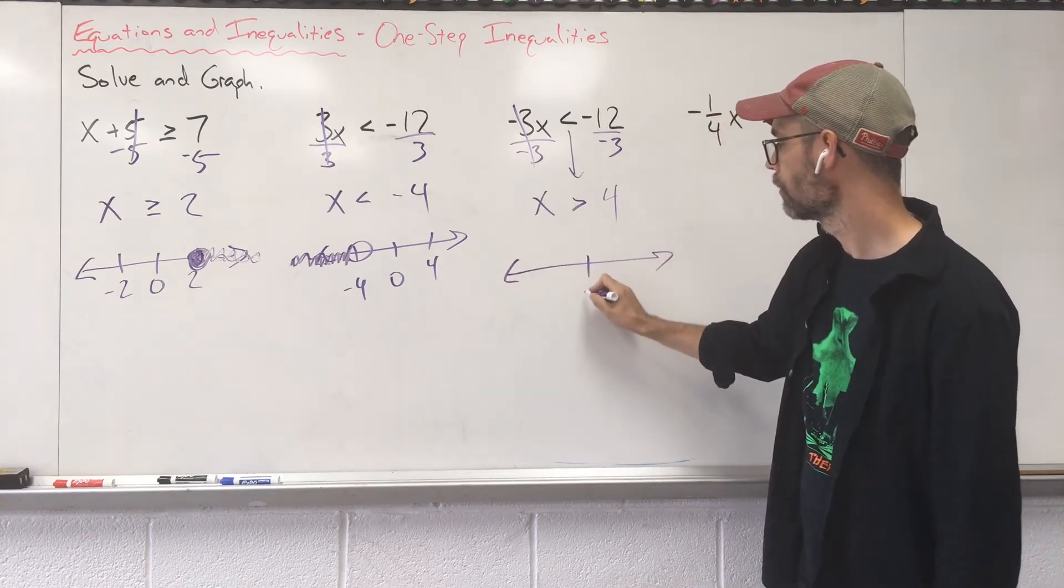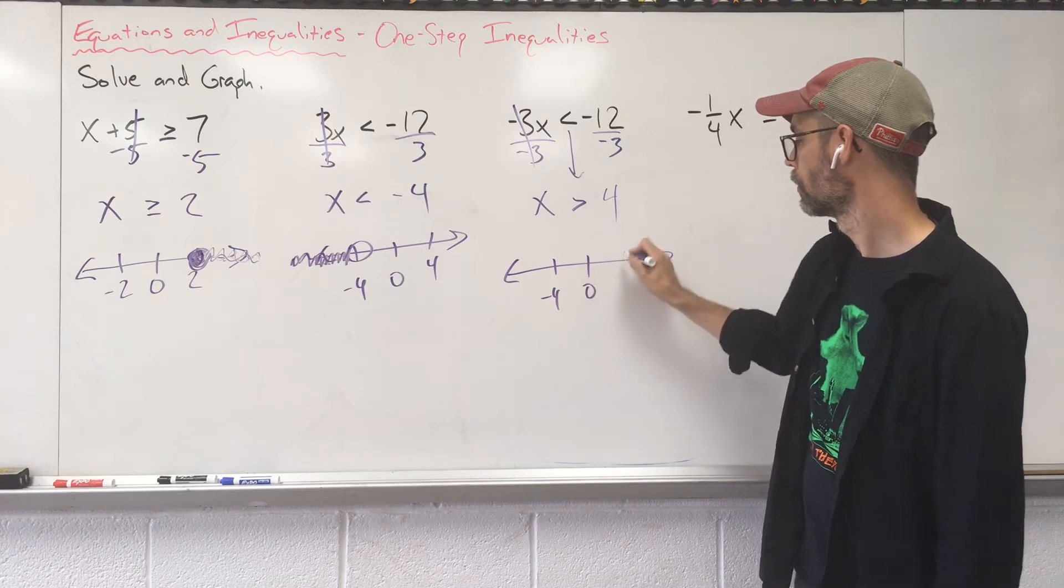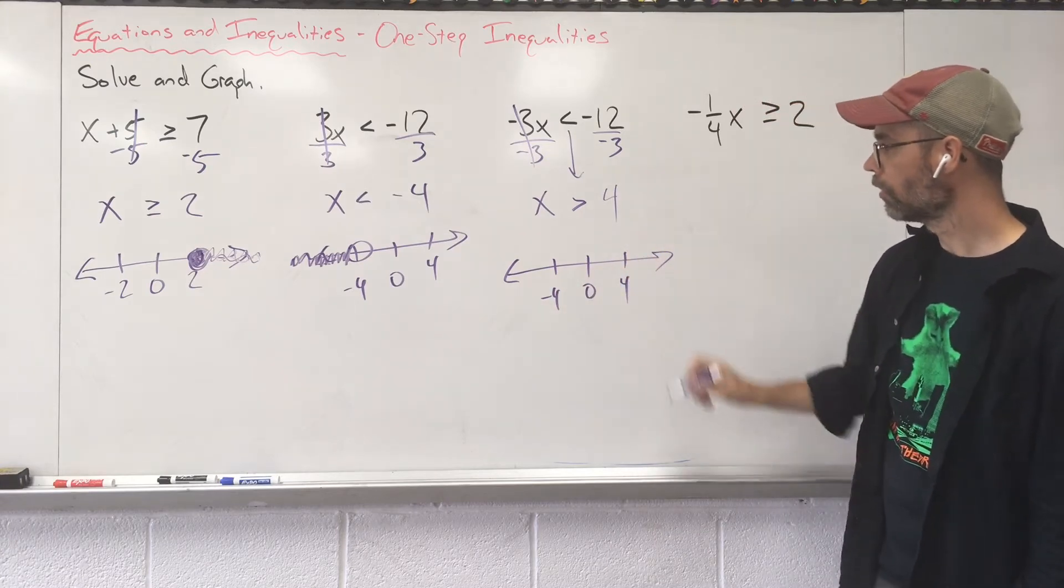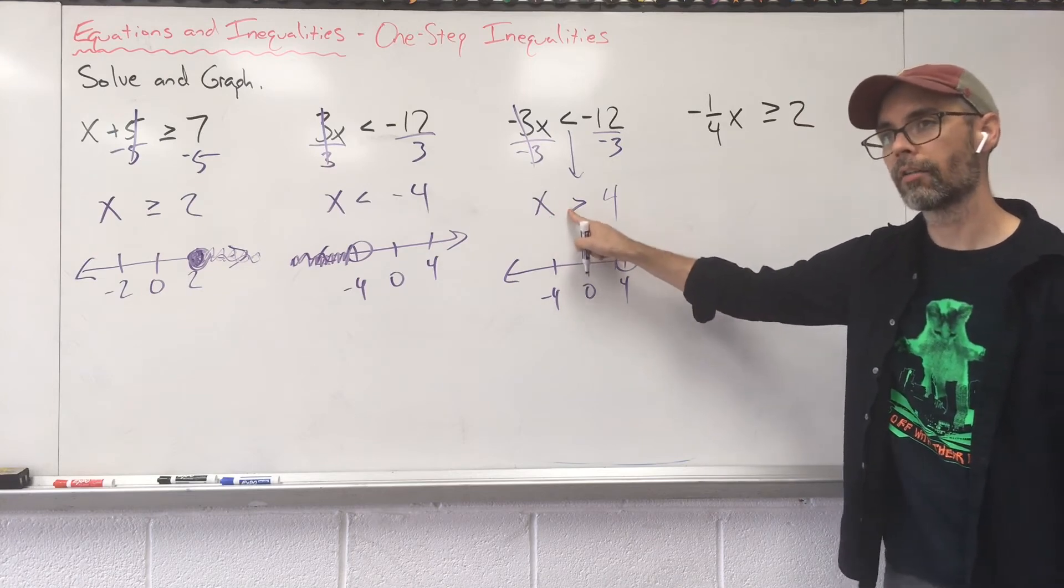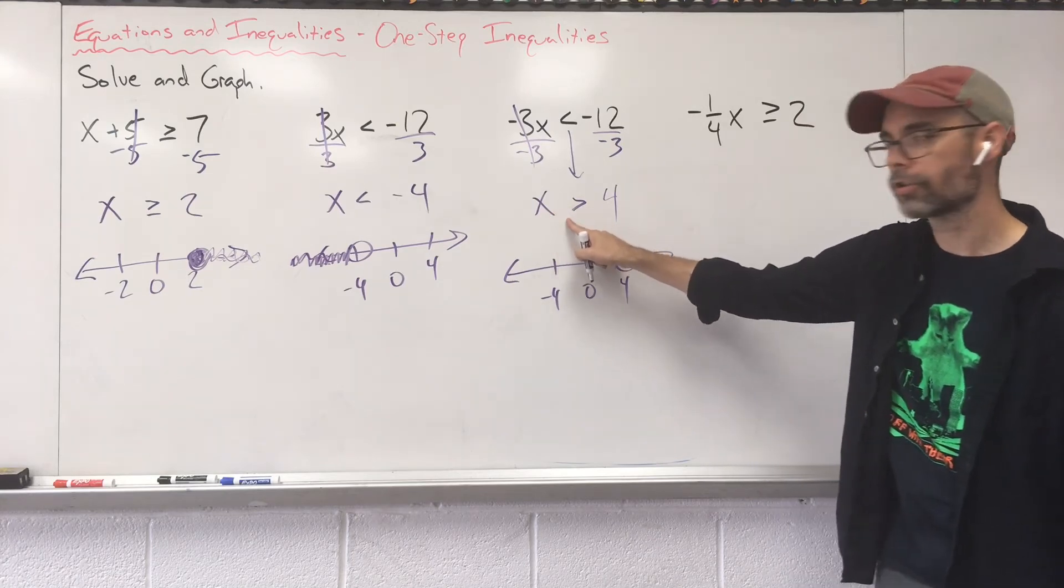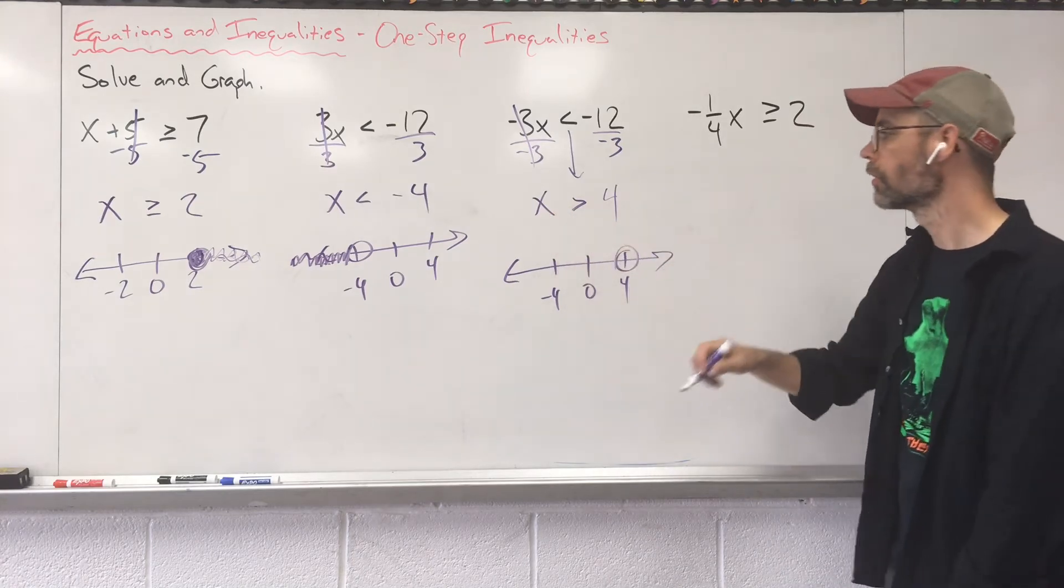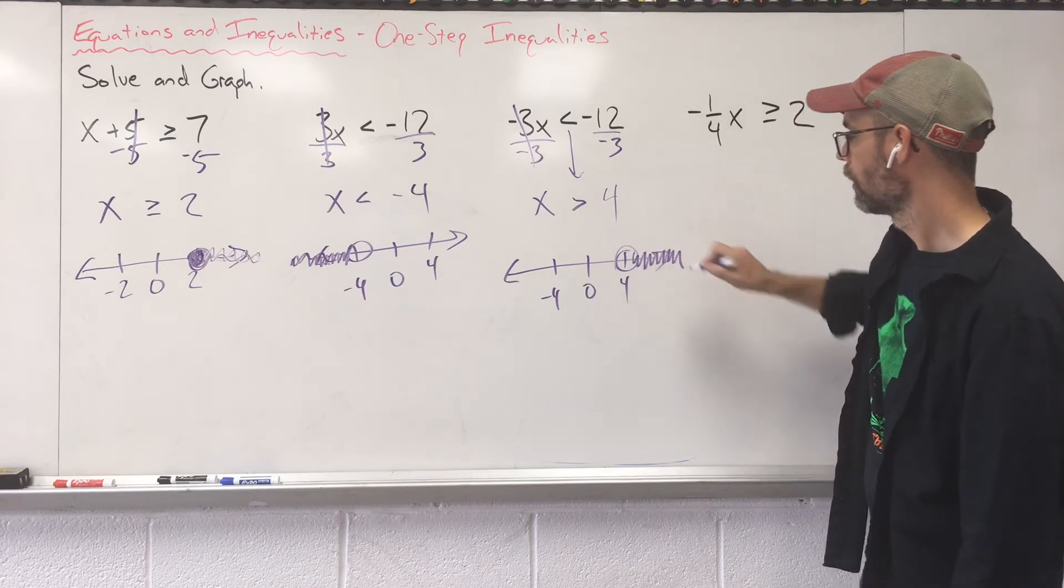So when we graph this now, open or closed? It's still going to be open. No equal sign. X is greater than. X is bigger. X is larger. Where do you have larger numbers? 5, 6, 7, 8. Everything off to the right.